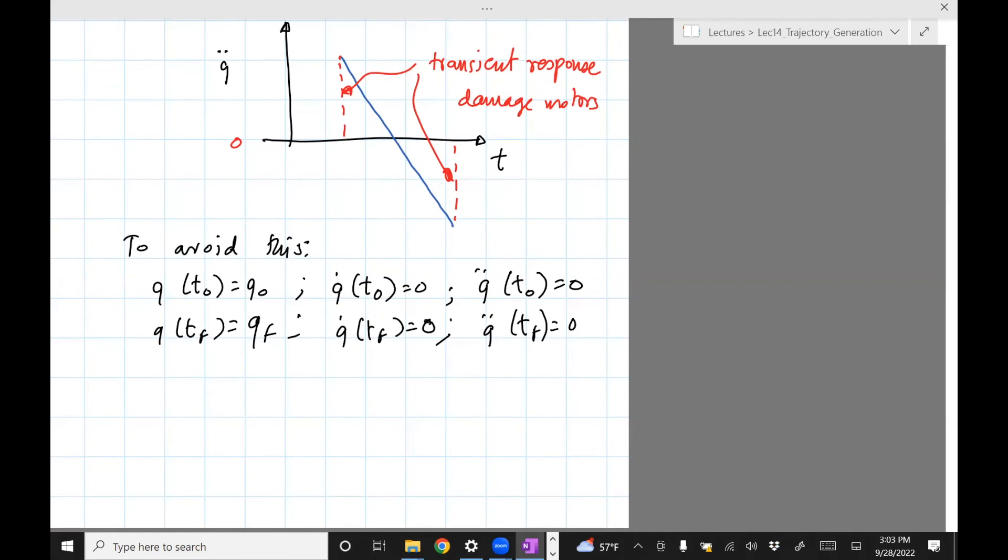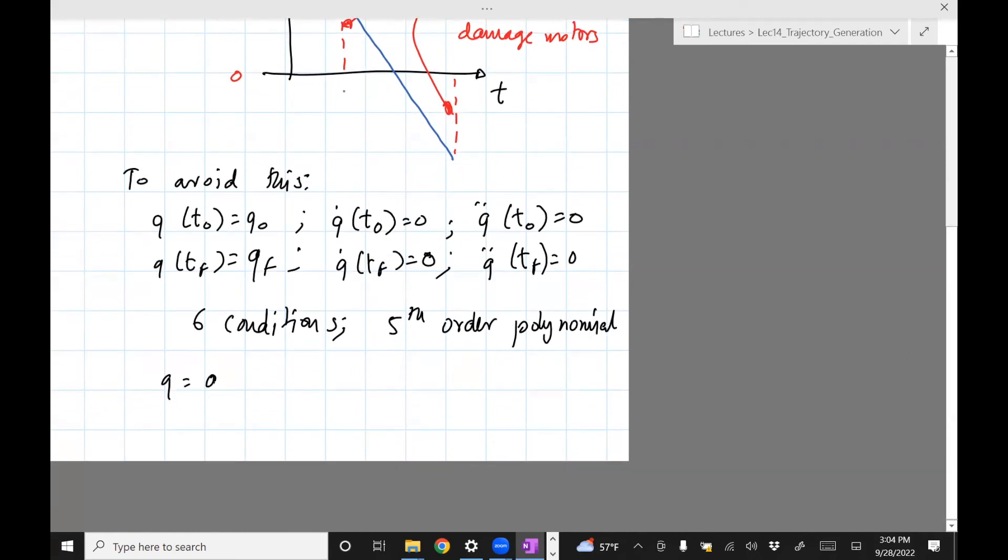And the simplest polynomial which satisfies all, which gives us enough degrees of freedom to represent it would be, so six conditions. So we need a fifth order polynomial. Right, because the fifth order polynomial will have six constants. The sixth one being the coefficient associated with the constant. So that would be q equals a0 plus a1*t plus a2*t squared plus a3*t cubed plus a4*t^4 plus a5*t^5. Okay, now there's going to be a problem. So I'm not going to go through the exercise of doing that. But can you see the problem?